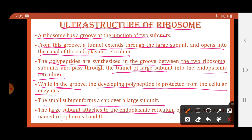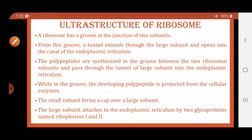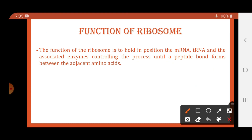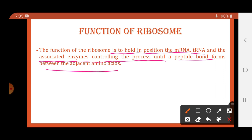While in the groove, the developing polypeptide is protected from cellular enzymes. If cellular enzymes acted on it, the protein being formed would be degraded. The small subunit forms a cap-like structure over the large subunit, and the large subunit attaches to the endoplasmic reticulum by two glycoproteins called ribophorins 1 and 2. The function of the ribosome is to hold in position the mRNA, tRNA, and associated enzymes controlling the process until a peptide bond forms between adjacent amino acids.